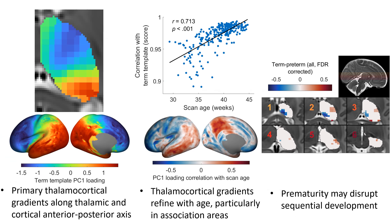In review: we find a primary axis of thalamocortical connectivity which predominantly extends across an anterior-posterior orientation in both the thalamus and cortex. Secondly, this spatial organisation is largely in place at the start of the third trimester and undergoes gradual refinement until term. Third, regional changes in these axes tend to be located in higher-order cortical and thalamic regions. And finally, preterm birth may partially disrupt development along these axes and thereby result in thalamocortical impairment. Thank you very much for listening.